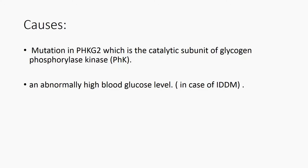Mauryak syndrome is caused by a mutation in the PHKG2 gene, which is the catalytic subunit of glycogen phosphorylase kinase (PHK). PHK is a large enzyme complex responsible for the activation of glycogen phosphorylase.